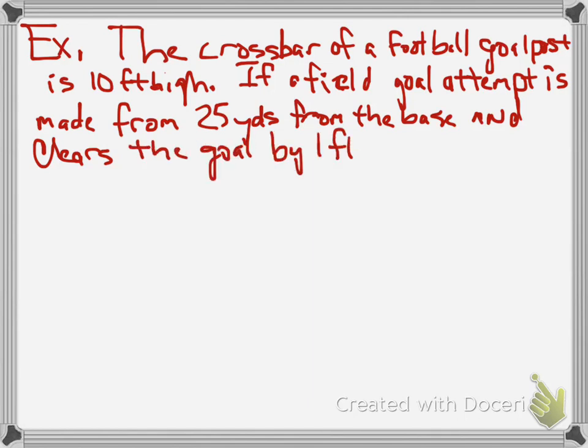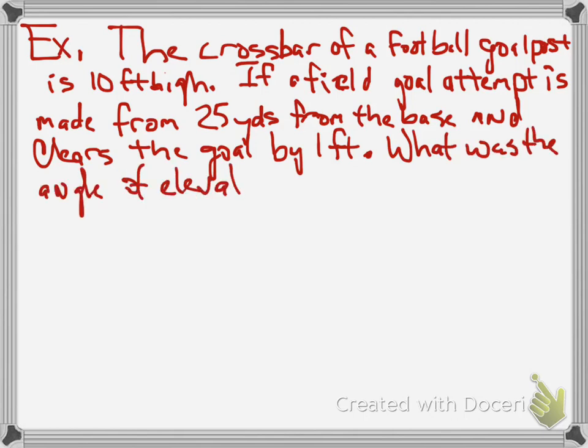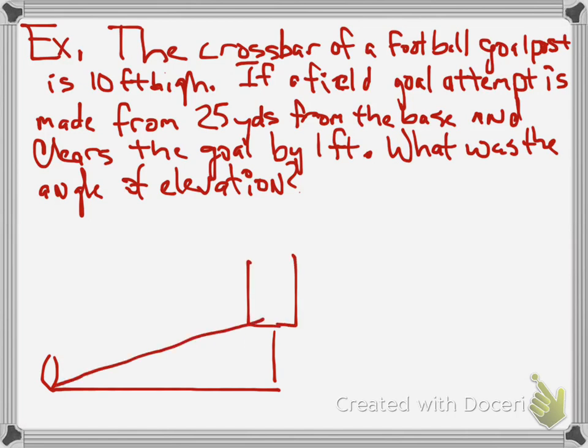Ooh, barely. I got a little nervous there. What was the angle of elevation? So in other words, what angle did I kick it to clear? So there's my little football. There's my little goal post. Now keep in mind, the goal post from the base to the crossbar is 10 feet. But it cleared by a foot. So that means the football rose 11 feet.